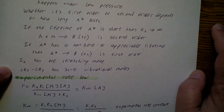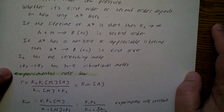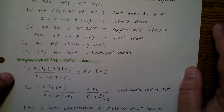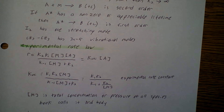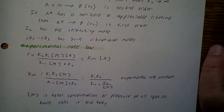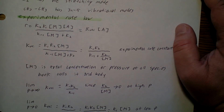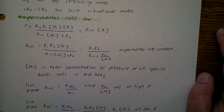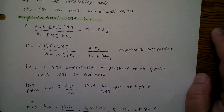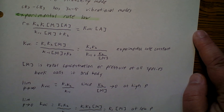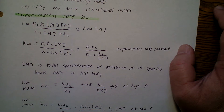Now let's say we have I2, that's got one stretching mode. CH3 to CH3 has 3N minus 5 vibrational modes. Now the experimental rate law: R = K2·K1·[M]·[A] / (K₋1·[M] + K2), and that's going to be equal to K_uni times the concentration of A. So K_uni = K1·K2·[M] / (K₋1·[M] + K2) = K1·K2 / (K₋1 + K2/[M]). That will be our experimental rate constant, K_uni.